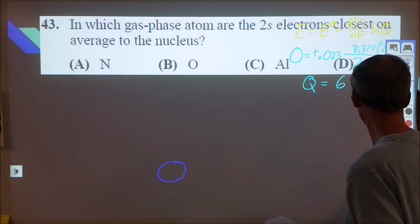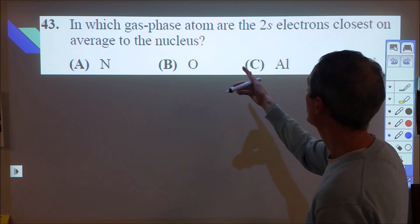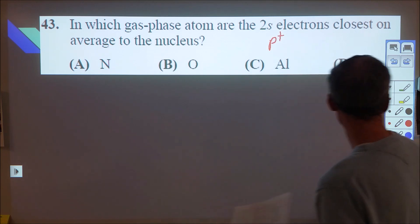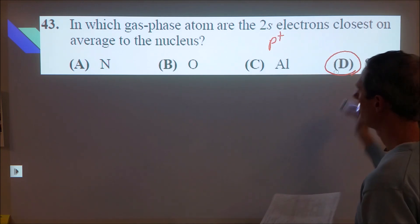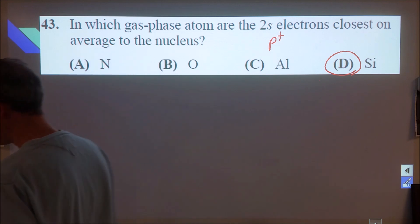Okay, moving on to here. So we've got a couple quicker questions. In which gas phase atom are the 2S electrons the closest on average to the nucleus? We're looking for the largest number of protons. That's nice and easy. We're looking at silicon. The amount of shielding should be close enough for everything else that it's irrelevant.